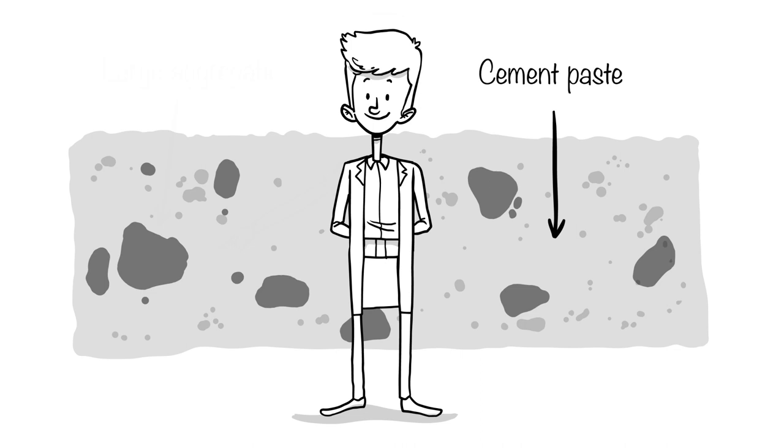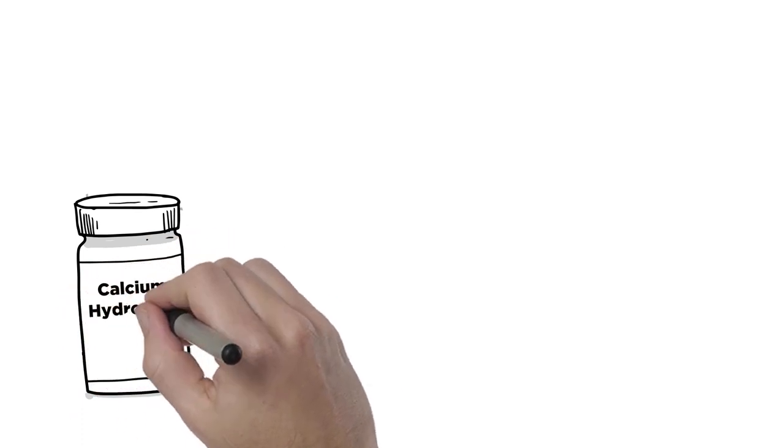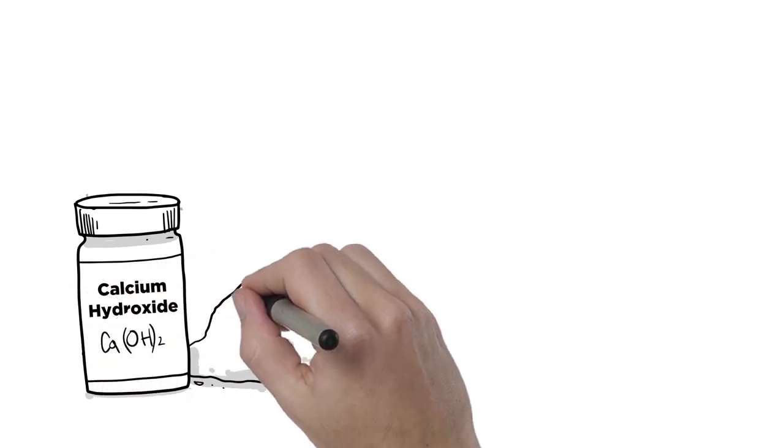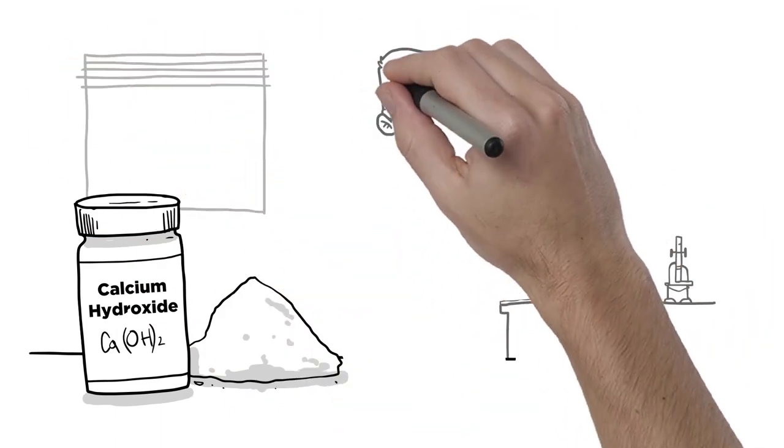This is what holds everything together and makes concrete hard. But in with that hard cement is calcium hydroxide. It is left over from the hydration process, and it isn't hard like the rest of the slab. In fact, it is actually pretty soft.